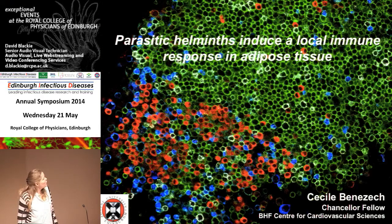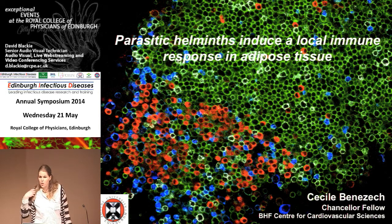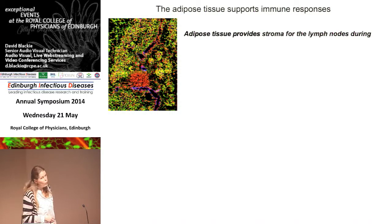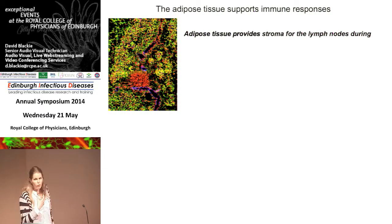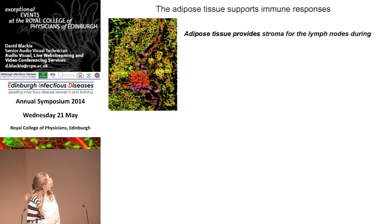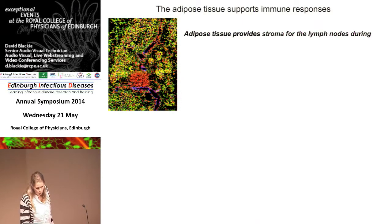Thank you for the invitation. I'm based in the Center for Cardiovascular Science and my interest is in immunology and its interaction with adipose tissue and metabolism. I first got interested in adipose tissue when I was working with Rory Kamano as a postdoc in Birmingham on the development of lymph nodes in the mouse embryo. Here you can see this lymph node in the embryo surrounded by differentiating adipose tissue, and what we showed at the time is that adipose tissue was providing stroma for the lymph node during its development.